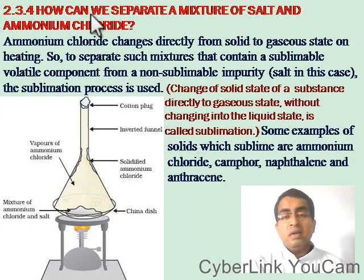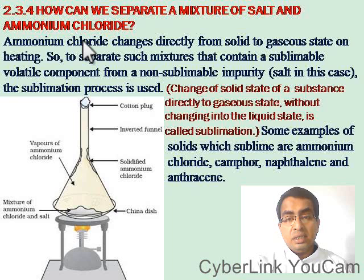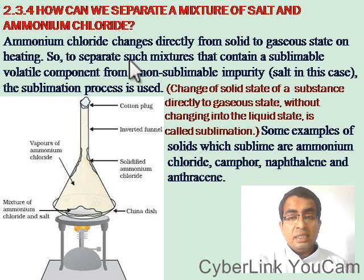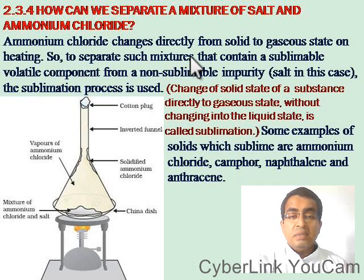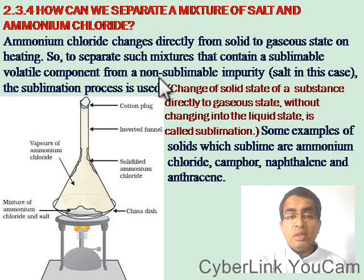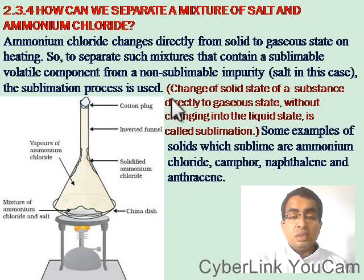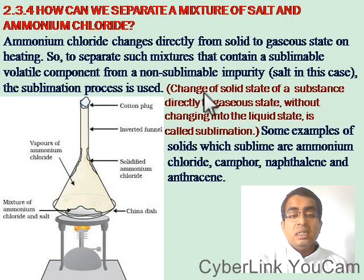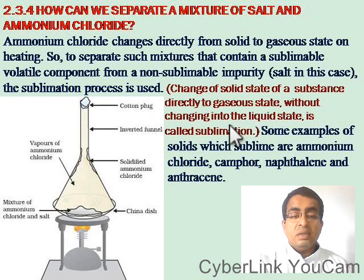Fourth, how can we separate a mixture of salt and ammonium chloride? Ammonium chloride changes directly from solid to gaseous state on heating. To separate such mixtures that contain a sublimable volatile component from a non-sublimable impurity — in this case salt — the sublimation process is used. Sublimation is the change of a substance directly from the solid state to the gaseous state without changing into the liquid state.